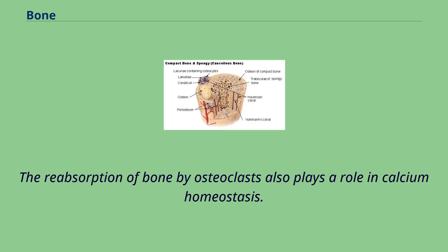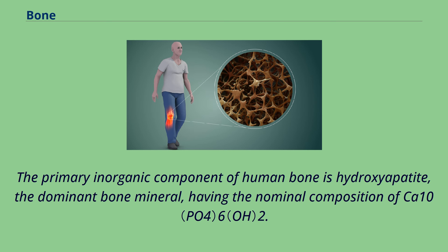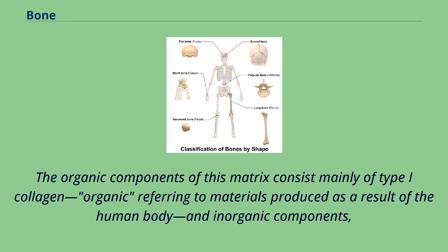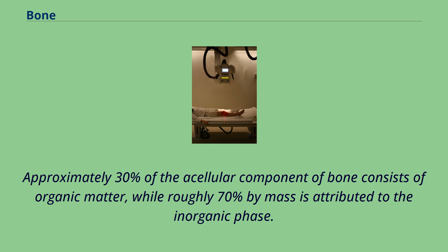The reabsorption of bone by osteoclasts also plays a role in calcium homeostasis. Bones consist of living cells embedded in a mineralized organic matrix. The primary inorganic component of human bone is hydroxyapatite, the dominant bone mineral. The organic components of this matrix consist mainly of type I collagen, and the inorganic components include other compounds of calcium and phosphate including salts. Approximately 30% of the acellular component of bone consists of organic matter, while roughly 70% by mass is attributed to the inorganic phase.